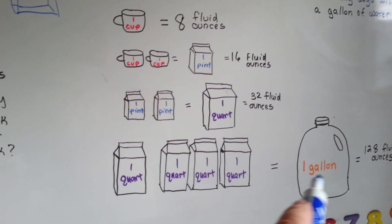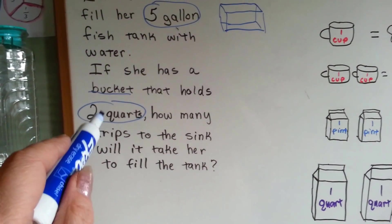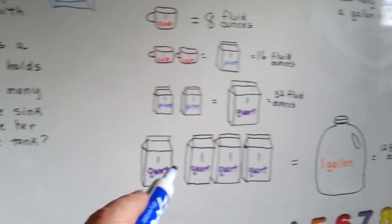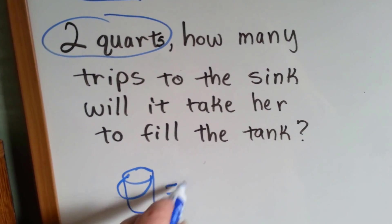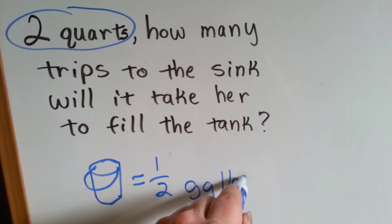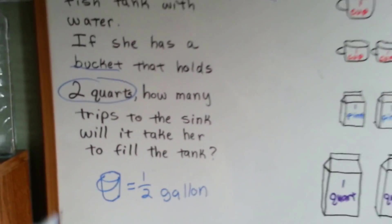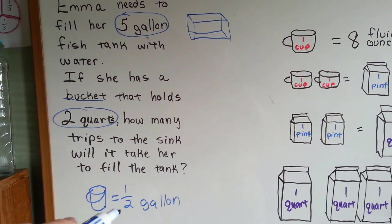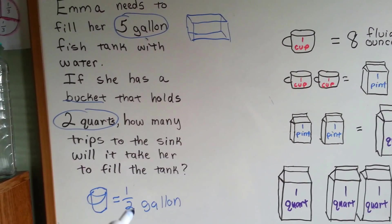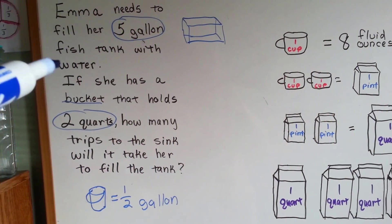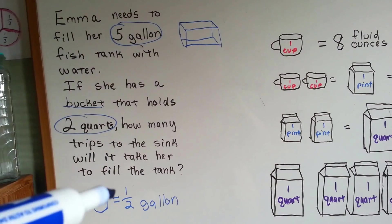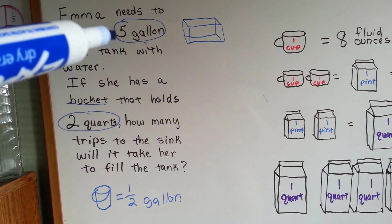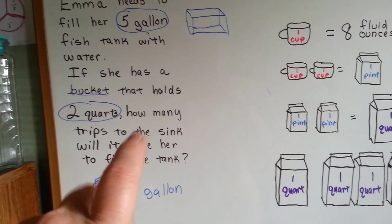There are four quarts in a gallon. But she only has a bucket that holds two quarts, which means she has a bucket that holds half a gallon. So her bucket equals half a gallon — it's two quarts. If the fish tank is five gallons, how many times is it going to take her to go to the sink? It's a half-gallon each time. That means two trips to the sink equals one gallon — a half-gallon and a half-gallon — so every two trips is one gallon.